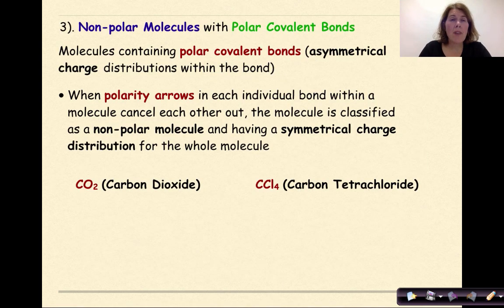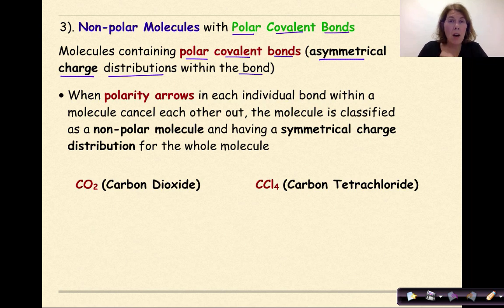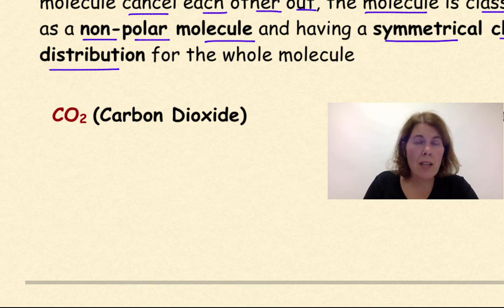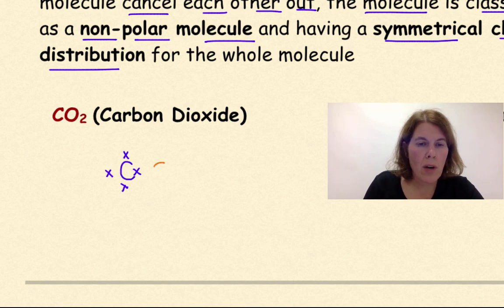For our third classification of nonpolar molecules, we're going to talk about nonpolar molecules with polar covalent bonds. Molecules containing polar covalent bonds have an asymmetrical charge distribution within the bond itself — an uneven charge distribution. When polarity arrows in each individual bond within a molecule cancel each other out, the molecule is classified as a nonpolar molecule with a symmetrical charge distribution for the whole molecule. Let's look at two examples. The first is carbon dioxide.